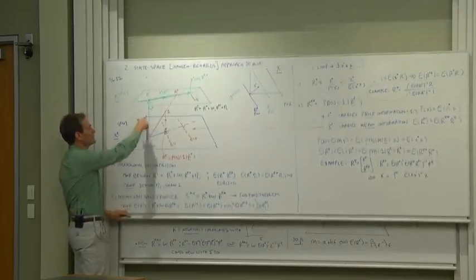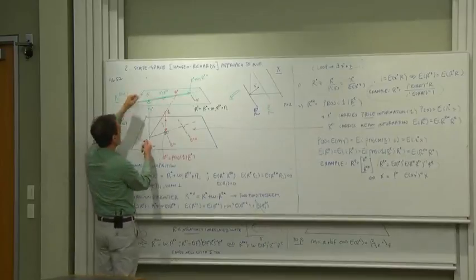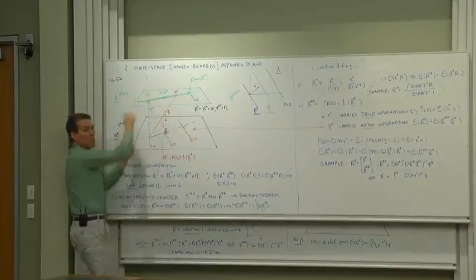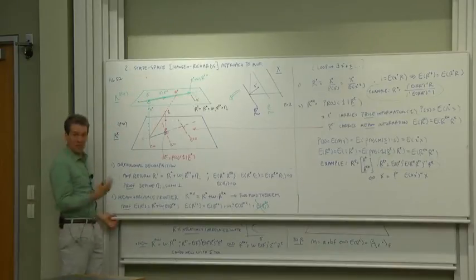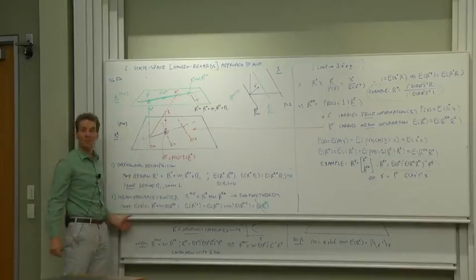Well in state space, second moment is the length of a vector and r star, since it's orthogonal here, it is the smallest length vector. You can prove that algebraically or you can just look at the picture, r star is the minimum second moment return.